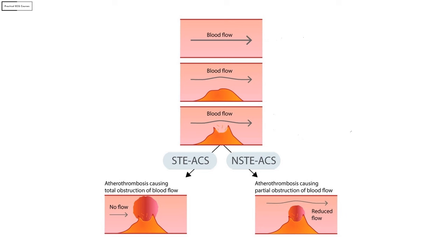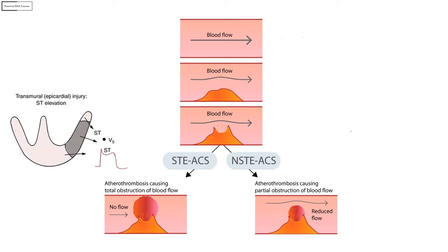ACS is essentially a condition where there is a demand-supply mismatch of oxygen to the myocardium. When an atherosclerotic plaque suddenly ruptures, a thrombus is formed. If the thrombus is big and totally occludes the artery, the entire myocardium dies and you have a transmural infarct — on ECG this is represented as ST segment elevation.